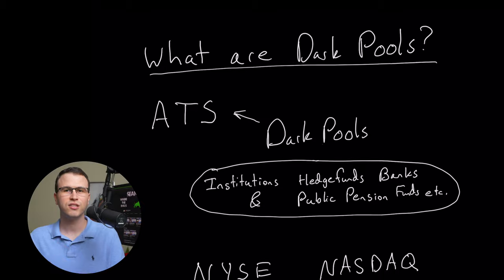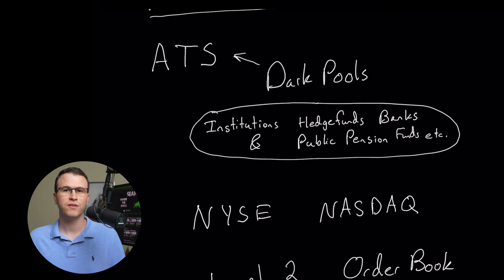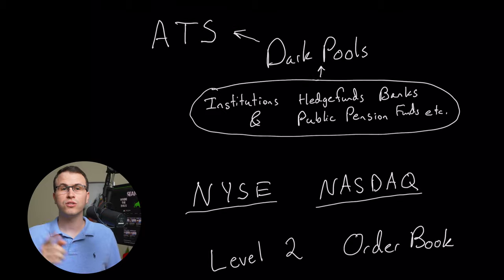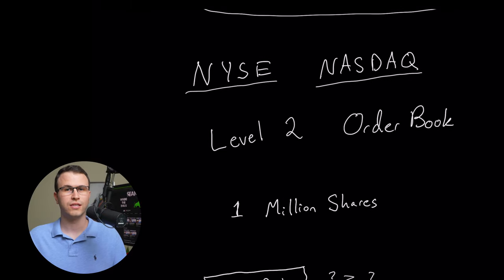There are institutions, hedge funds, banks, public pension funds, and more that can accomplish their large trades in blocks. Dark pools are used to hide their trades and their intentions from the public exchanges, such as the New York Stock Exchange and the NASDAQ. They're an alternate way to route orders as well.